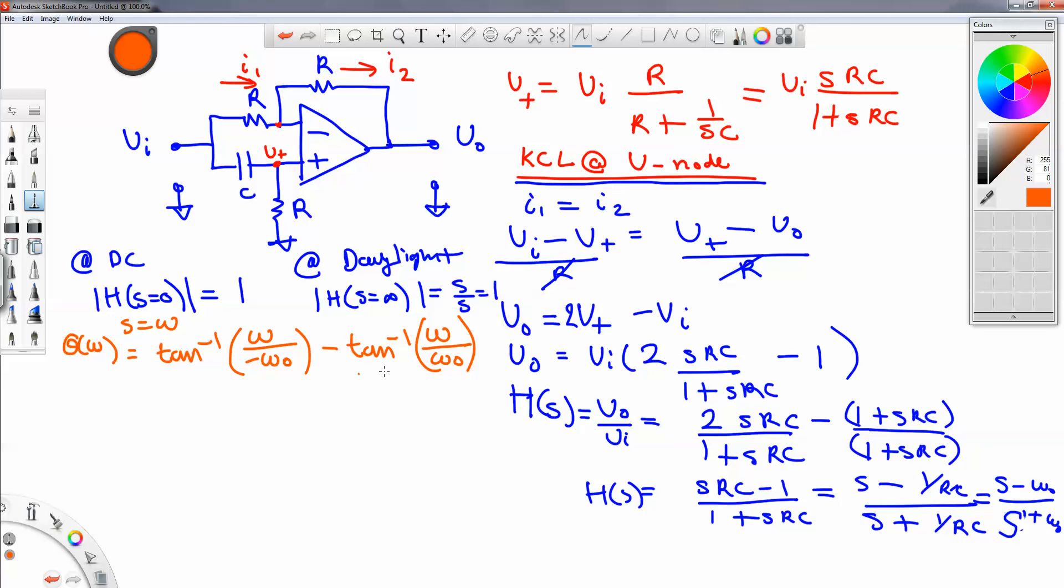Since this term is in the denominator, you have to put a negative sign if you want to combine the two to get the total phase. But you notice that this is in the second quadrant, and that's equivalent to having 180 degrees minus the tangent inverse of omega over omega naught. So basically to remove the negative sign over here, outside, you have to put 180 minus that.